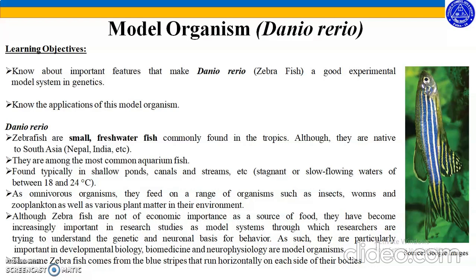Zebrafish are small freshwater fish commonly found in the tropics, although they are native to South Asia. They are among the most common aquarium fishes, found typically in shallow ponds, canals, and streams.